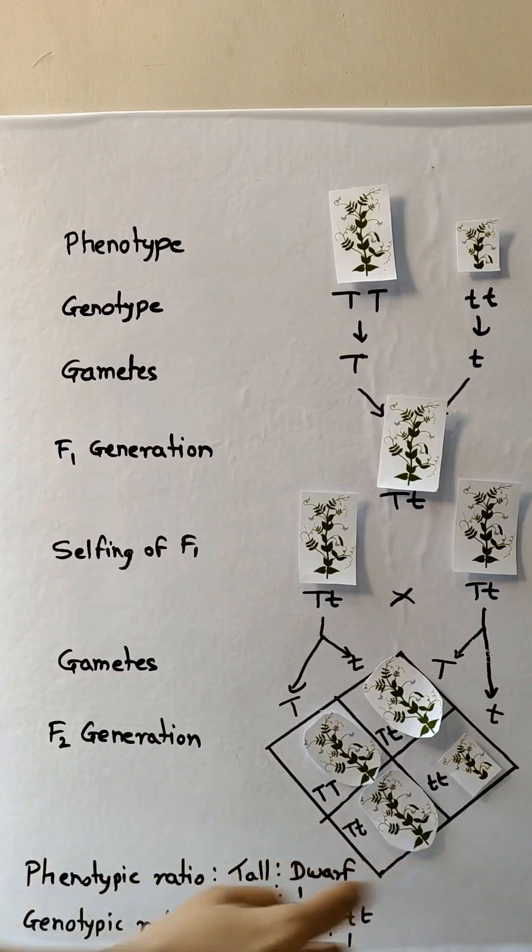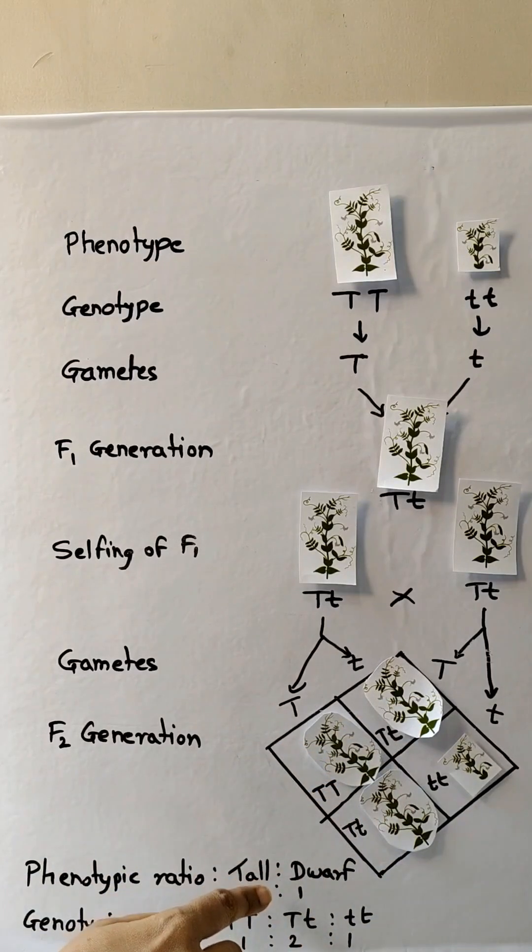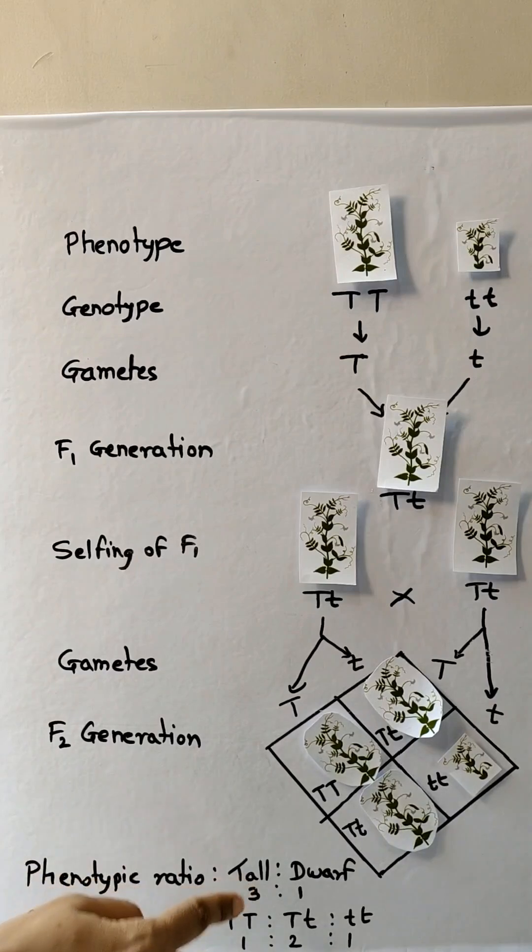Here you can see the phenotypic ratio. The dwarf is only one and the tall are three. That is three is to one phenotypic ratio.